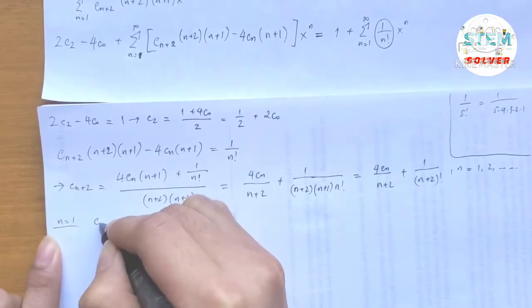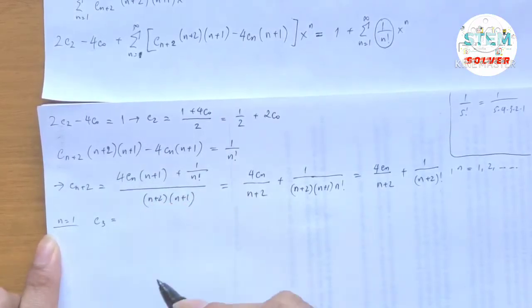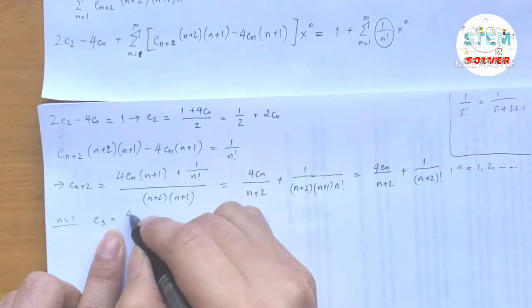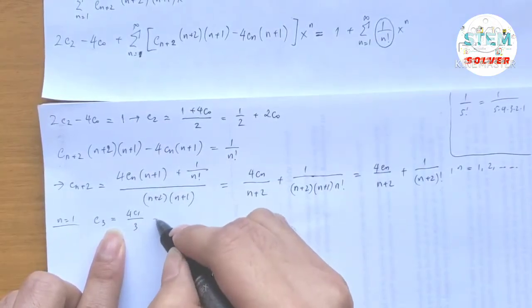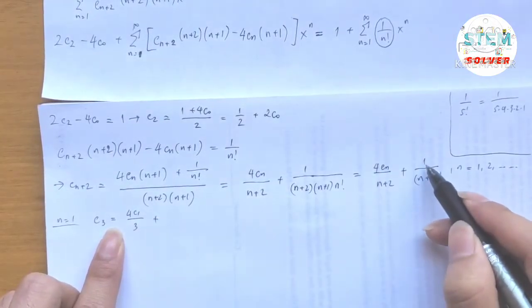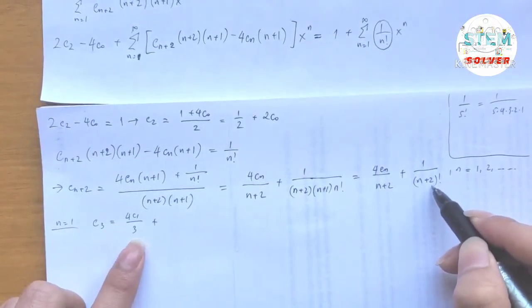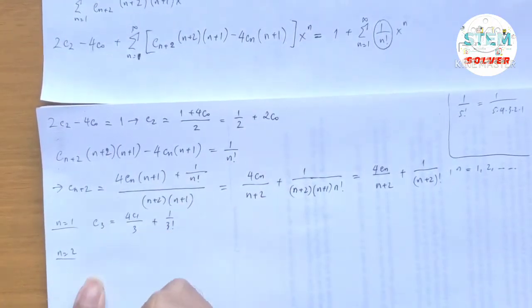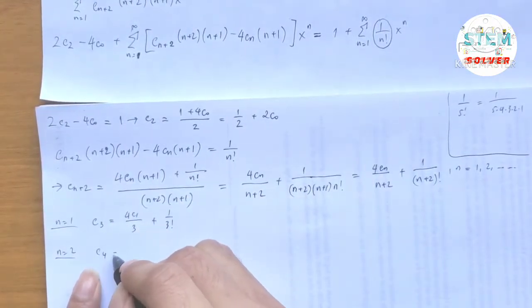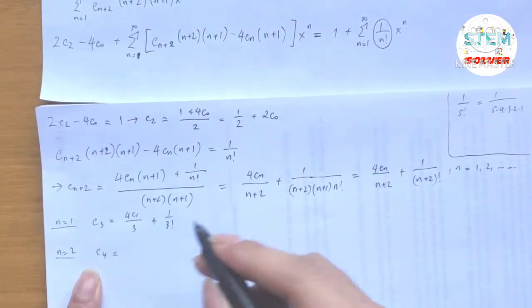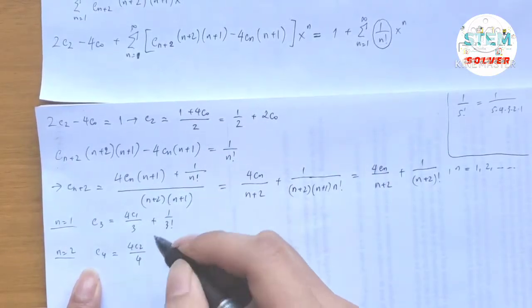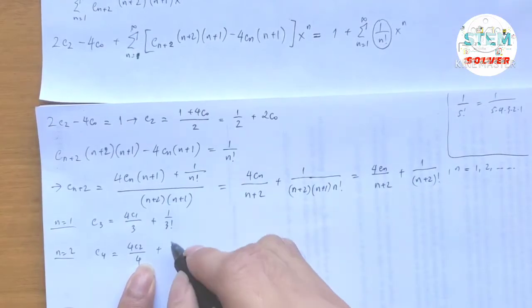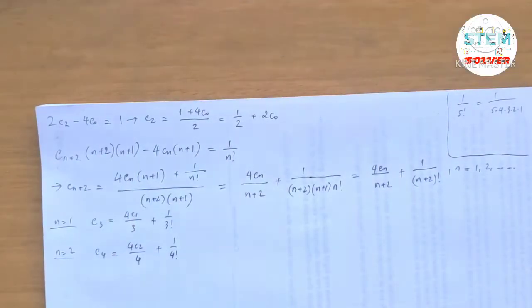When n=1: c₃ equals 4c₁/3 plus 1/3!. When n=2: c₄ equals 4c₂/4 plus 1/4!.